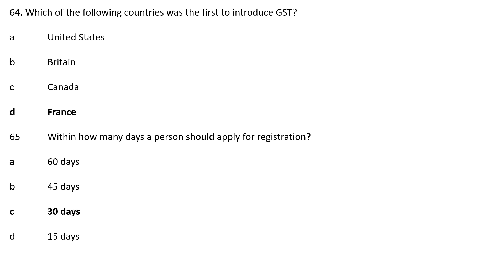Question 64: Within how many days should a person apply for registration? Option A: 60 days; Option B: 45 days; Option C: 30 days; Option D: 15 days. The correct answer is Option C, 30 days. A person should apply for GST registration within 30 days once he becomes liable for payment of GST.